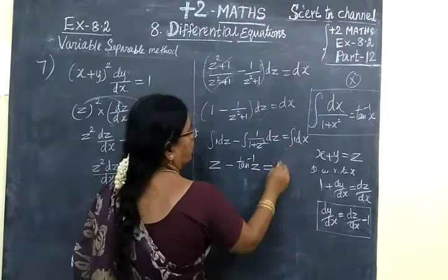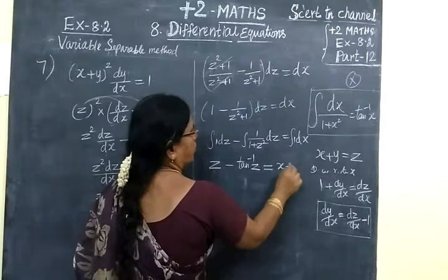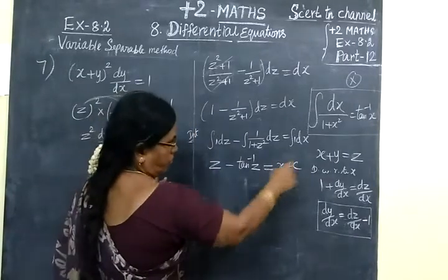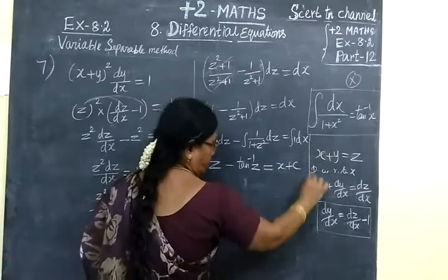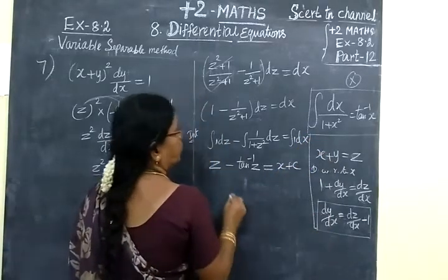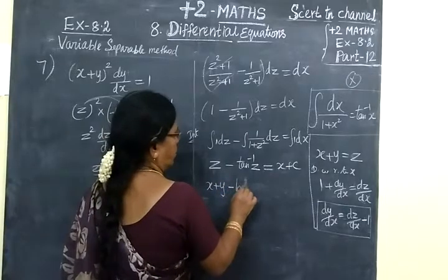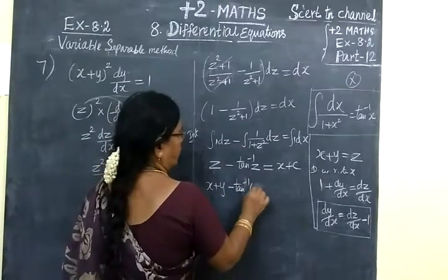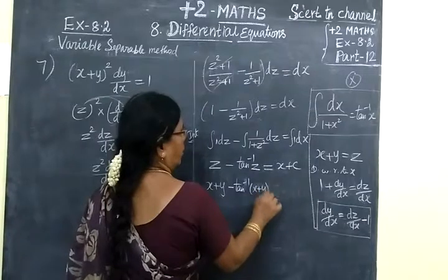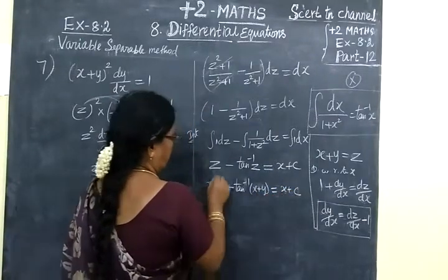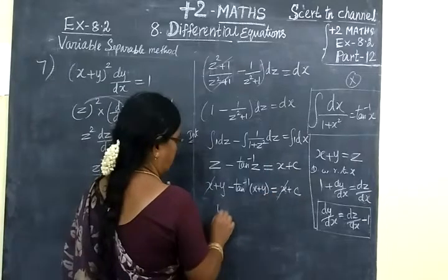Equals integral of 1 dx, which is x plus c. Now replace z. z was x+y, so we get x+y minus tan inverse (x+y) = x + c. x cancels on both sides.